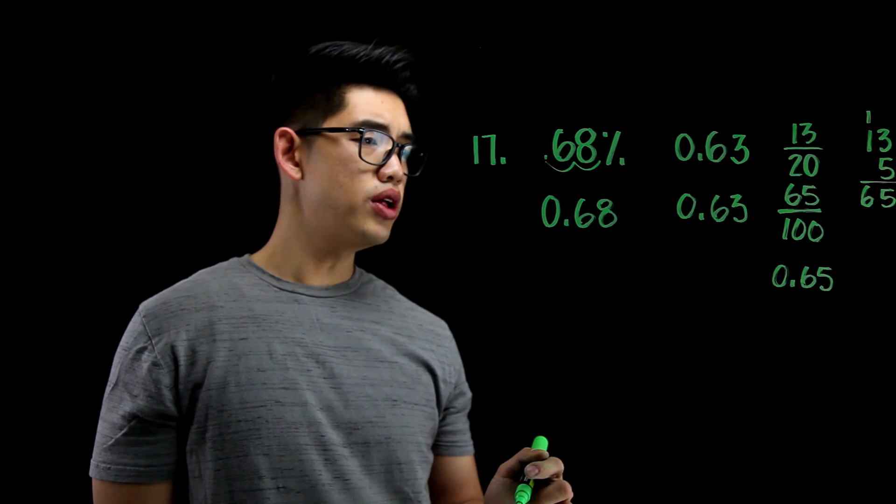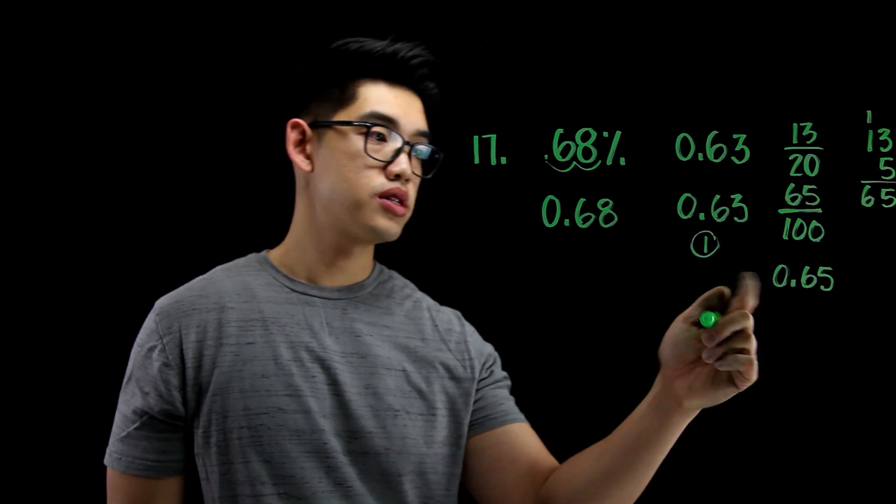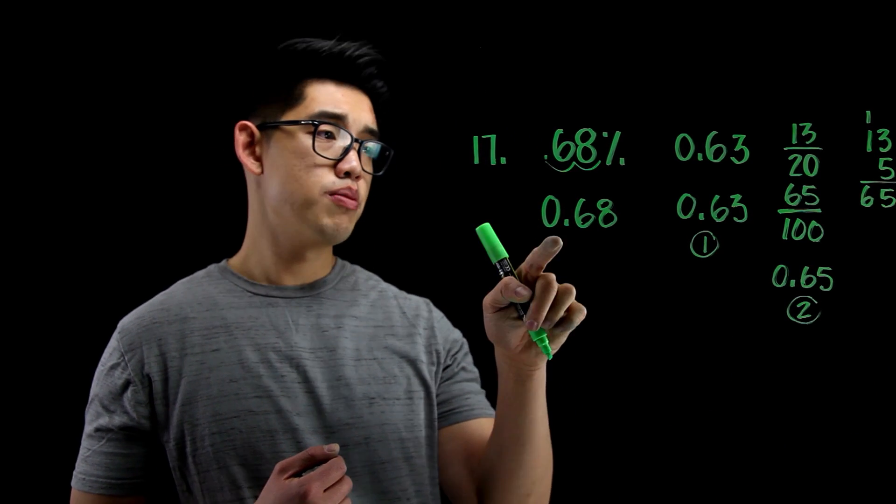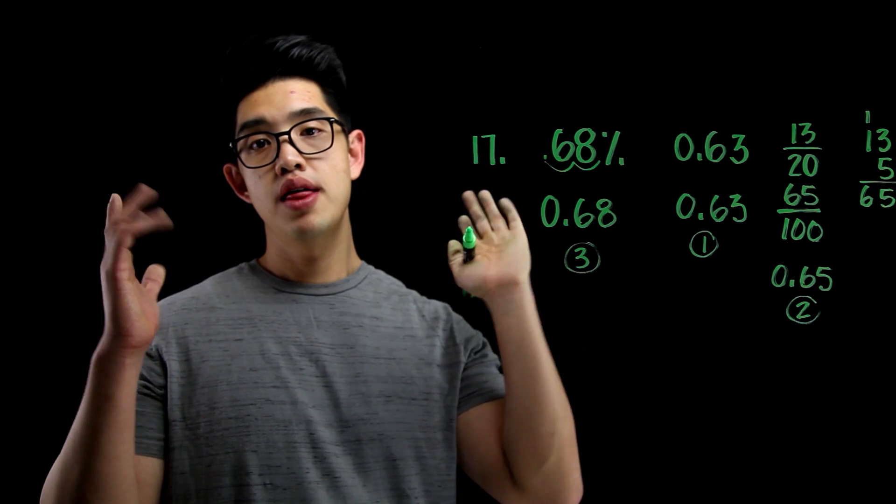And then my smallest number is going to be this one right here. I'm going to put a 1 there. My second smallest number is this one right there. Put a 2 there. And my largest number is going to be that one. So, I'm going to put a 3 there. And boom! That's your answer.